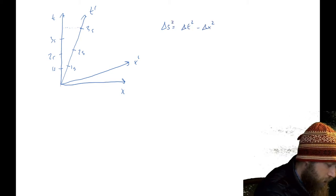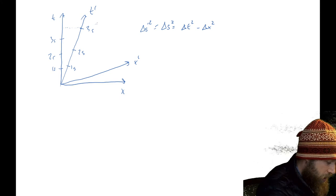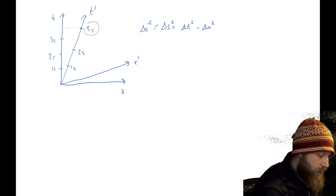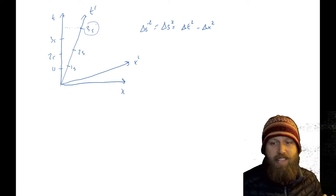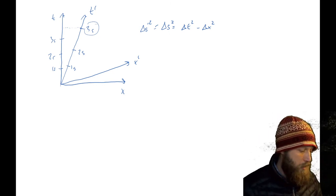But remember, this delta s squared can also be delta s prime squared. So basically, even though this event is in the prime frame, it can be represented by the same equation in t and x, because space time intervals are true in all frames. So if you remember that, that was kind of our basic argument.